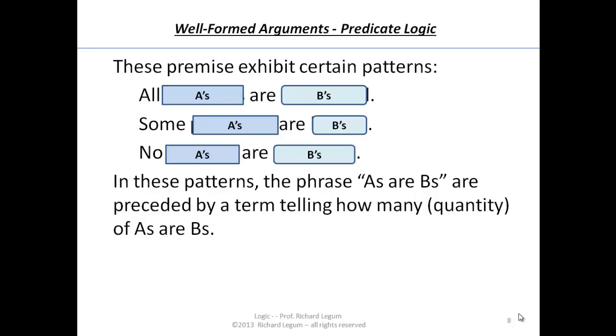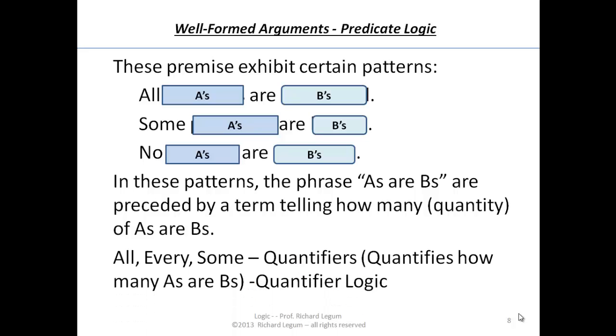For that reason, words like all, every, some, or no or none are called quantifiers, because they quantify - they tell how many A's are B's. In fact, predicate logic is also called categorical logic, but it's also called quantifier logic because all, some, none are the quantifiers, the logical words that are of relevance to the inferences. Those are the things that are critical in making good or bad inferences in predicate or quantifier logic.